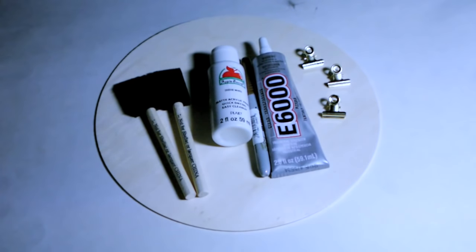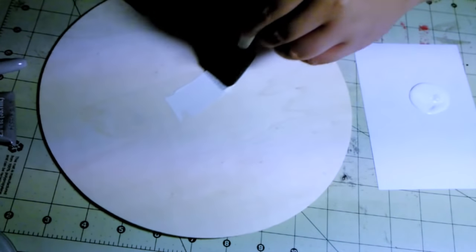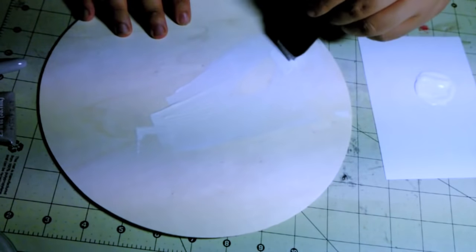For the next DIY, you're going to be needing a sponge brush, some acrylic paint, some marker of your choice, E6000 glue, some clips, and a wooden circle. And I got my wooden circle at Hobby Lobby. And it's a huge one.